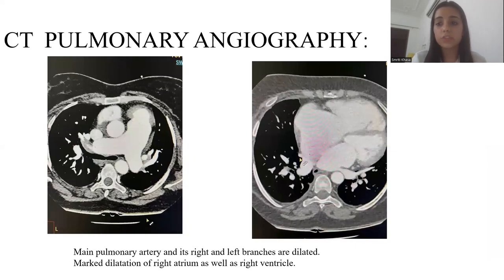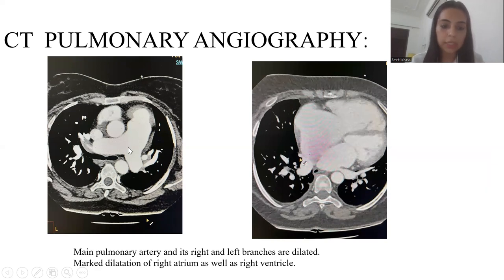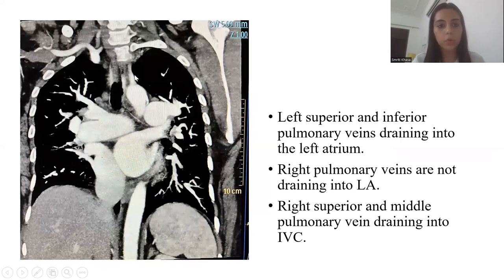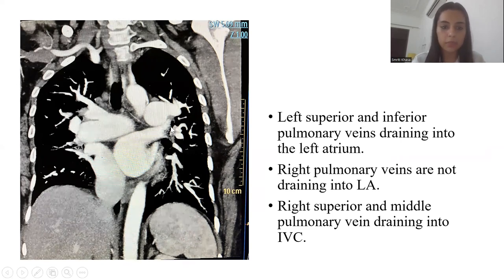CT pulmonary angiography was performed. The first film is in axial section — it shows the main pulmonary artery and its right and left branches to be dilated. The second image shows marked dilatation of the right atrium as well as the right ventricle. Left atrium and left ventricle appear normal. This is a coronal image in which left superior and inferior pulmonary veins drain into the left atrium, which is a normal finding.